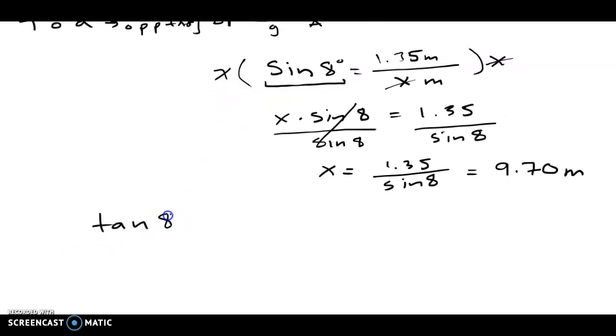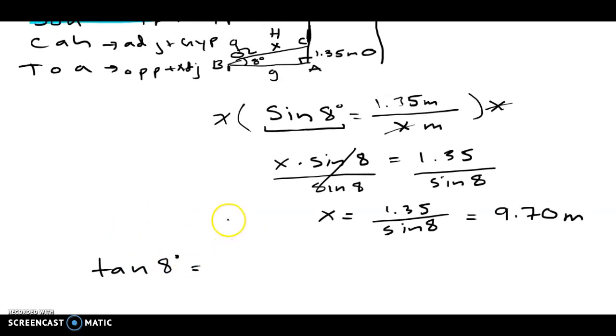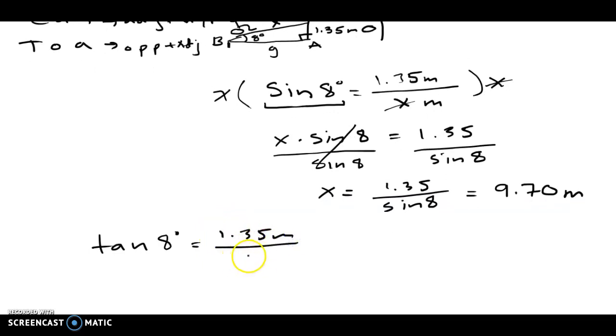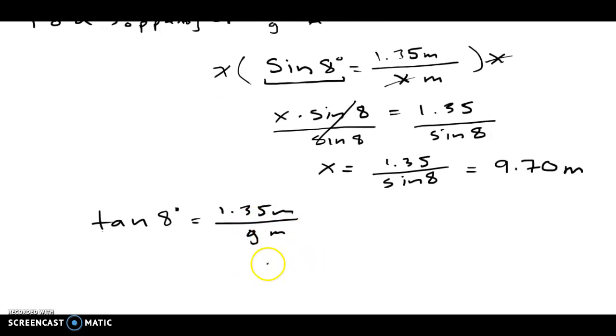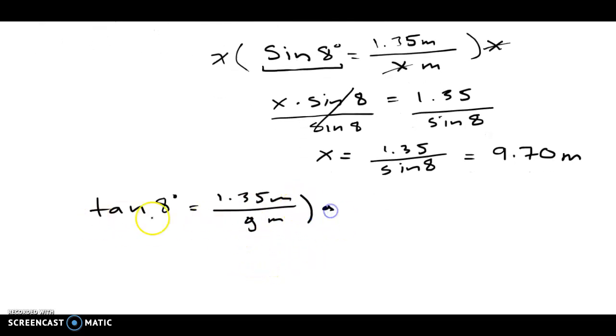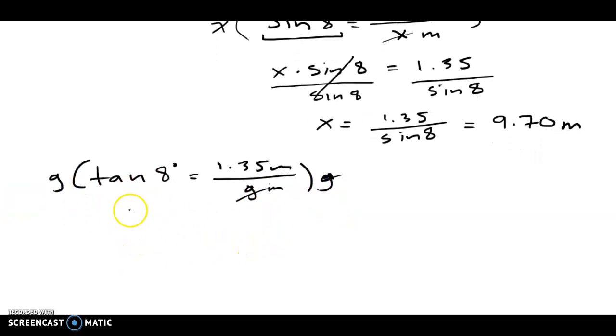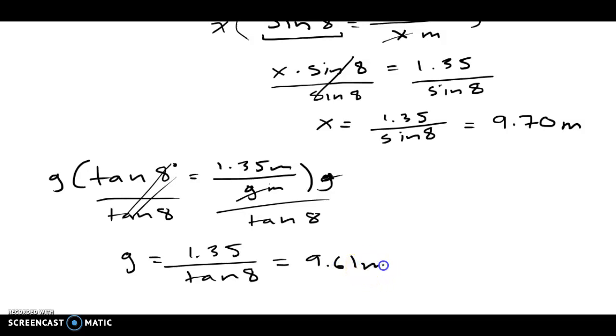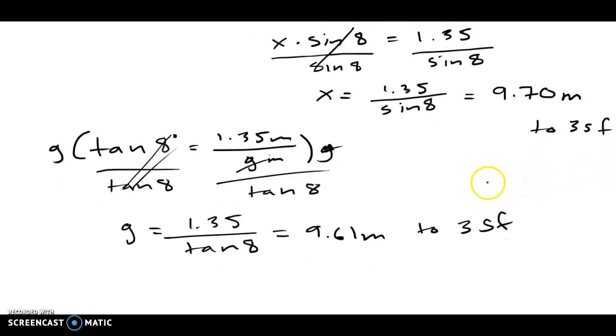So if we use tangent, tangent of 8 degrees is equal to the opposite, which is 1.35 meters, divided by g meters. And we would do the same exact process. Multiply both sides by g, these cancel, and then you divide both sides by tangent of 8 degrees to cancel that, and you get g is equal to 1.35 divided by tangent of 8 degrees, which to three significant figures is 9.61 meters.